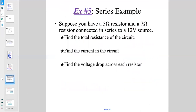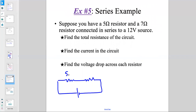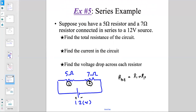Let's look at an example. Suppose you have a 5-ohm resistor and a 7-ohm resistor connected in series to a 12-volt battery. Label them R1 (5 Ω) and R2 (7 Ω). First, find the total resistance: since they are in series, R_total = R1 + R2 = 7 + 5 = 12 ohms.